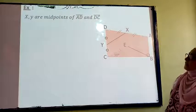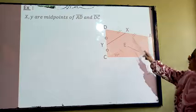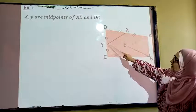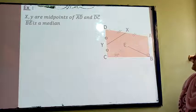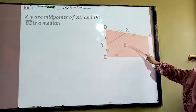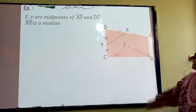Y and X are midpoints of AD and DC. BE is median in the right angle triangle ABC.